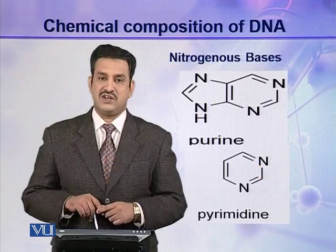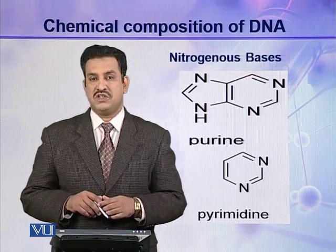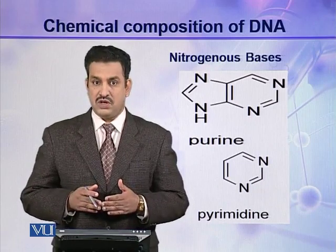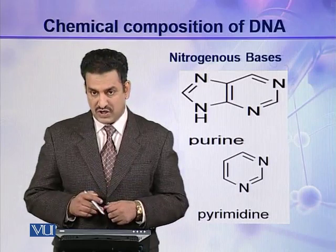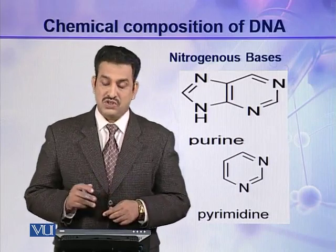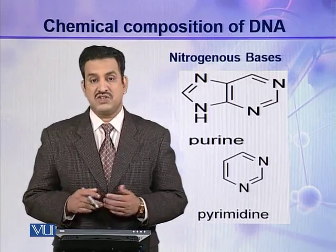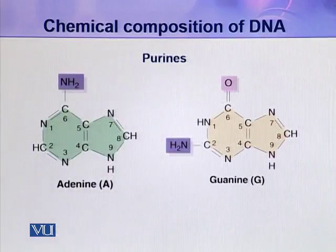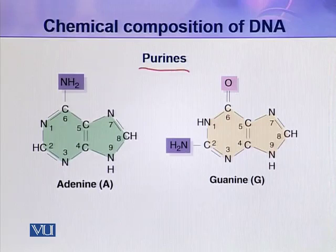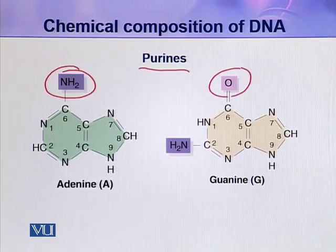The second component is the nitrogenous base. Four different types of nitrogenous bases are present in a DNA molecule, and they are derived from two parent compounds: purines and pyrimidines. Adenine and guanine are purines. Look at the pictures — there are only minor differences between them. Adenine and guanine are both derivatives of the parent compound purine.